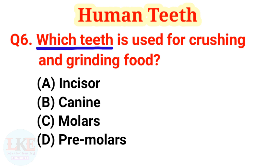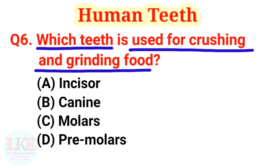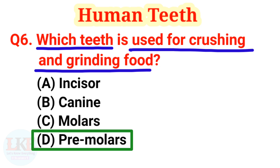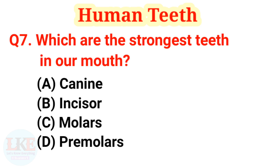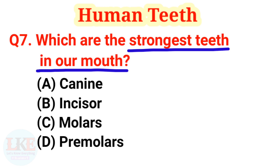Question number 6: which teeth are used for crushing and grinding food? The right answer is option D, premolars. Premolar teeth are used to tear, grind, and crush food into smaller bits. Remember, children do not have premolar teeth. Question number 7: which are the strongest teeth in our mouth? The correct answer is option C, molars. Molar teeth are the strongest and largest teeth, and their large flat biting surface helps us for chewing, crushing, and grinding food.